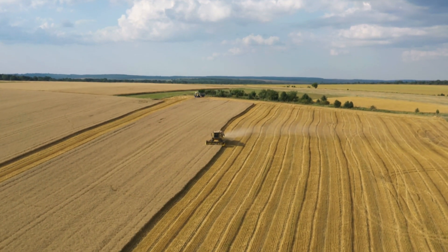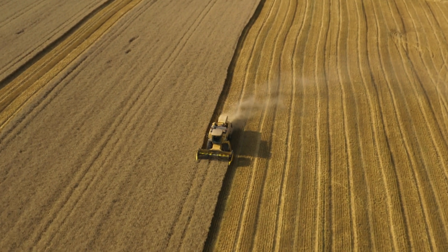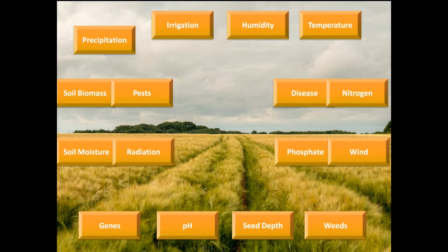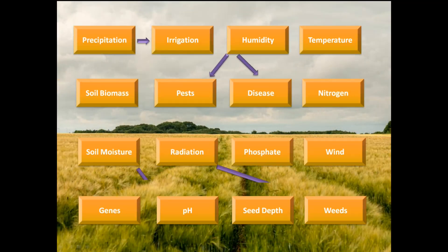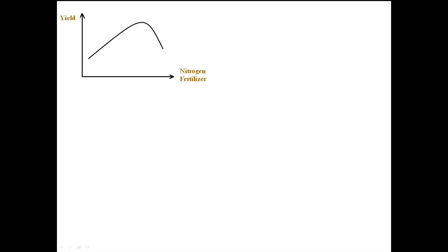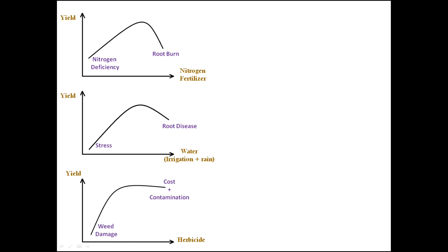Thanks to advances in precision agriculture, different types of data are collected from the farms. Data-driven farming is not only about finding the way these inputs affect the outputs of a farm, but also the complexity of interactions between these variables. Let's show the challenge of extracting insight from farm data with a simple example. The role of nitrogen fertilizer, water, and herbicide on yield is known and pretty much established. Having all other factors unchanged, you can find the optimum amount of each to maximize the yield.